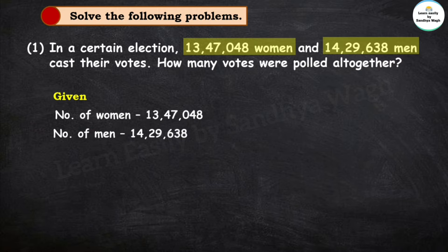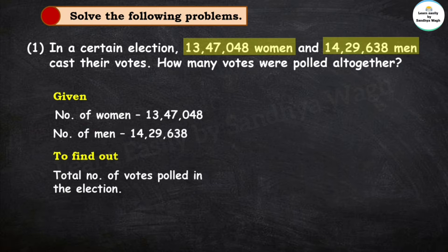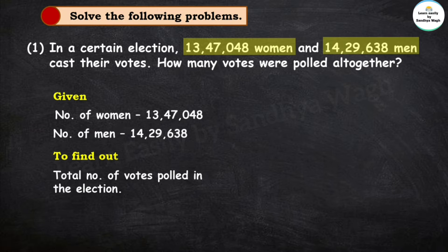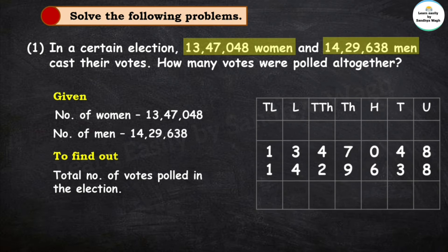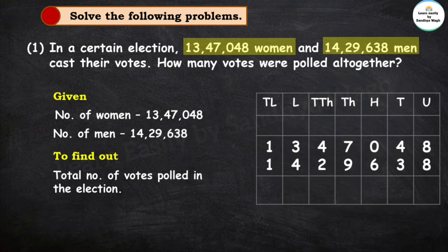We have been asked to find out the total number of votes polled in the election — how many total votes were cast. So we need to add these two numbers together.